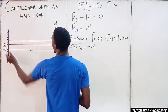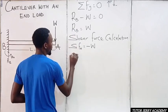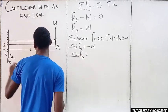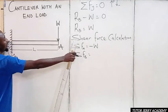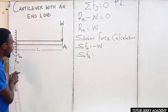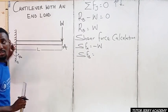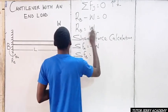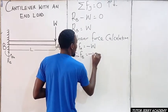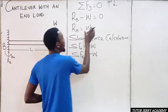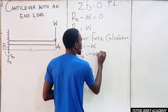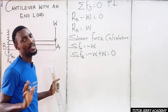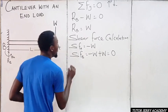We don't have any other force between A and B, so now we calculate the shear force at point B. Standing at point B and looking to the right, we have the load W downward and the reaction R_B upward. So the shear force at B equals minus W plus R_B, which is minus W plus W, which equals zero.